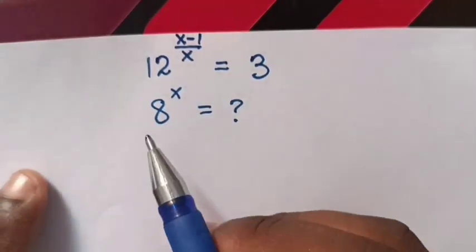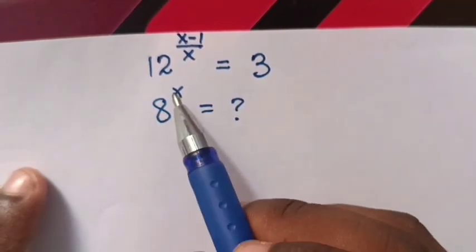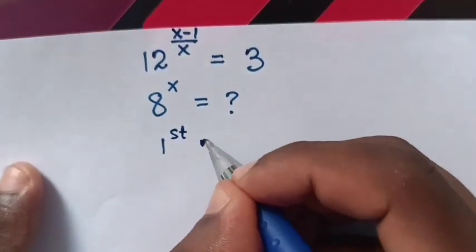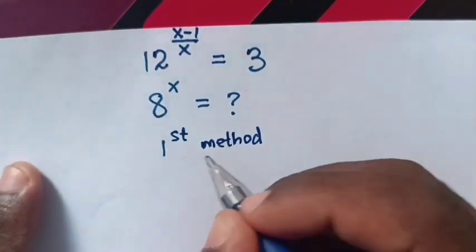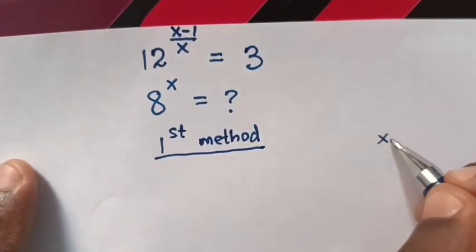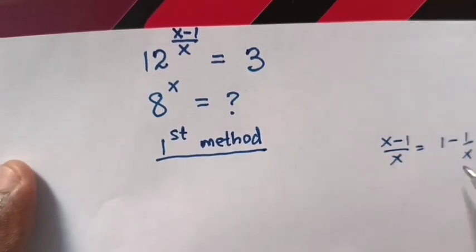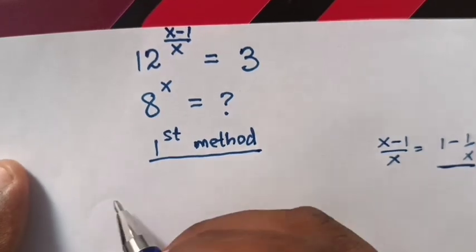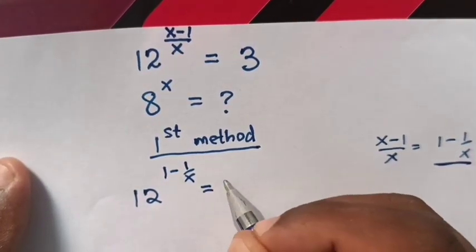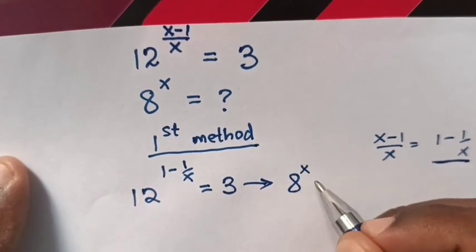How to solve 12 power (x minus 1 over x) equals 3. What is the value of 8 power x? At the end of the video, comment below which method is easy for you. First method: from 12 power (x minus 1 over x), note that x minus 1 over x is the same as 1 minus 1 over x, so we substitute this to the power. Now we have to find the value of 8 power x.